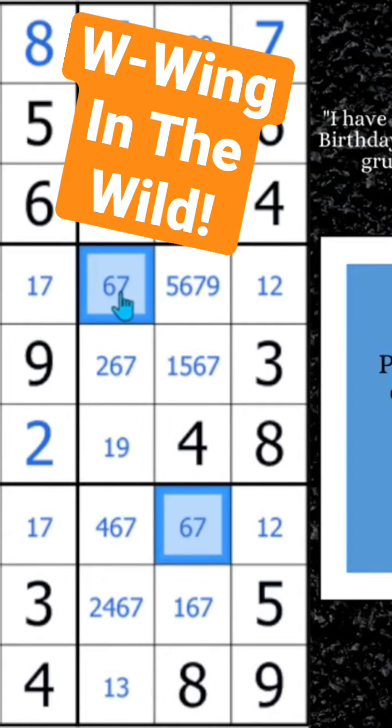So with W-Wing, you have to have the same bi-value cells. So you got a 6-7 here, and you got a 6-7 there.